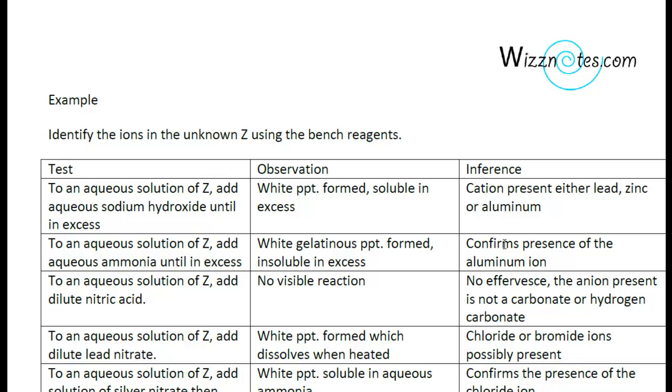Now that we know that aluminum ions are present, we have to identify the anion that is present also.